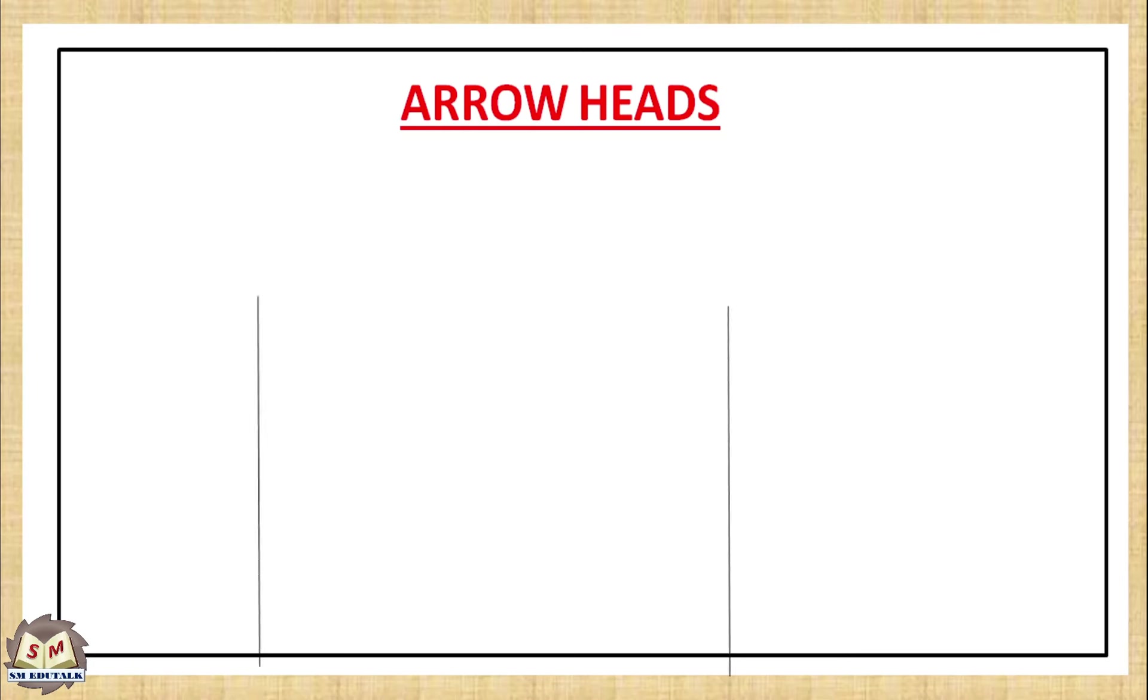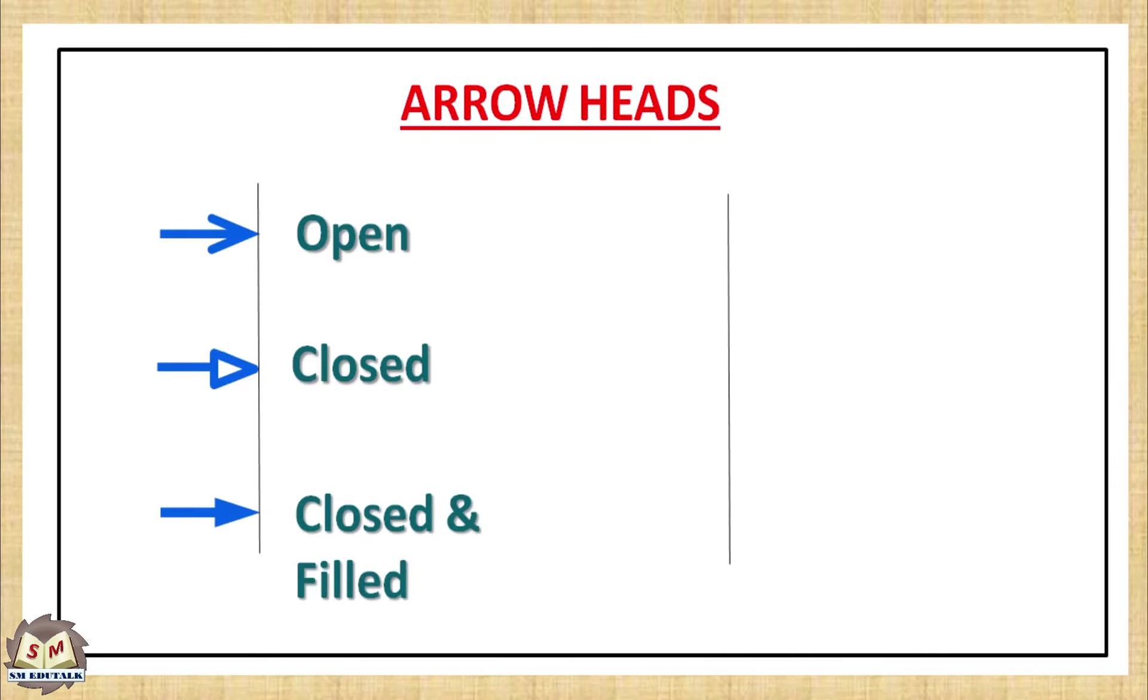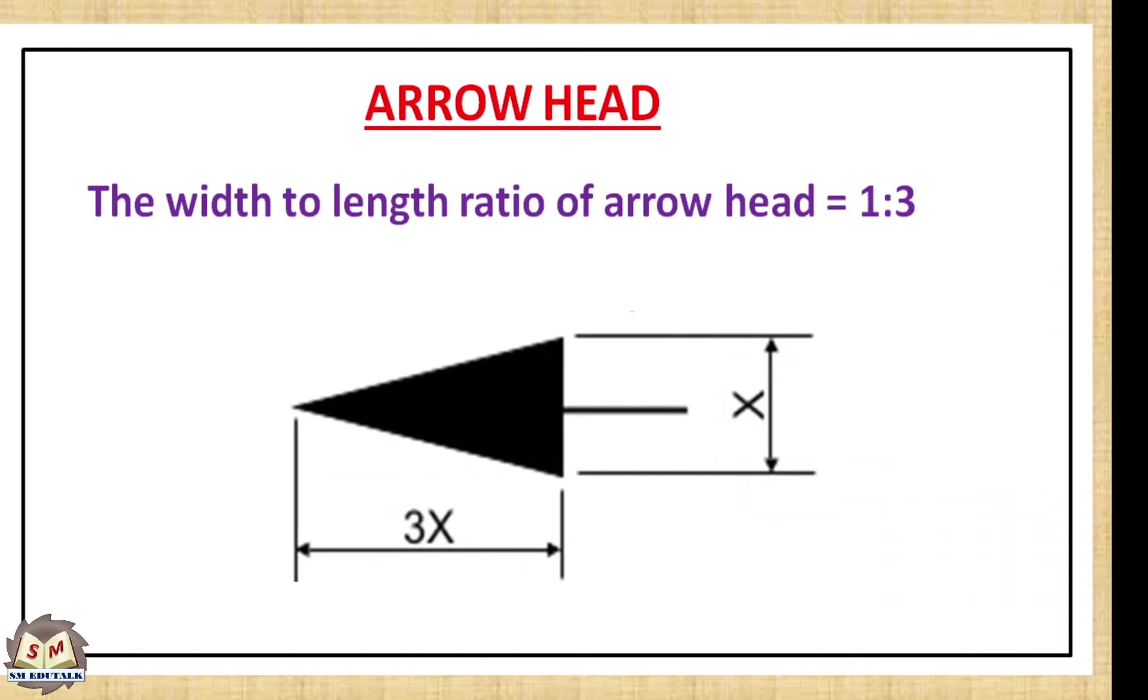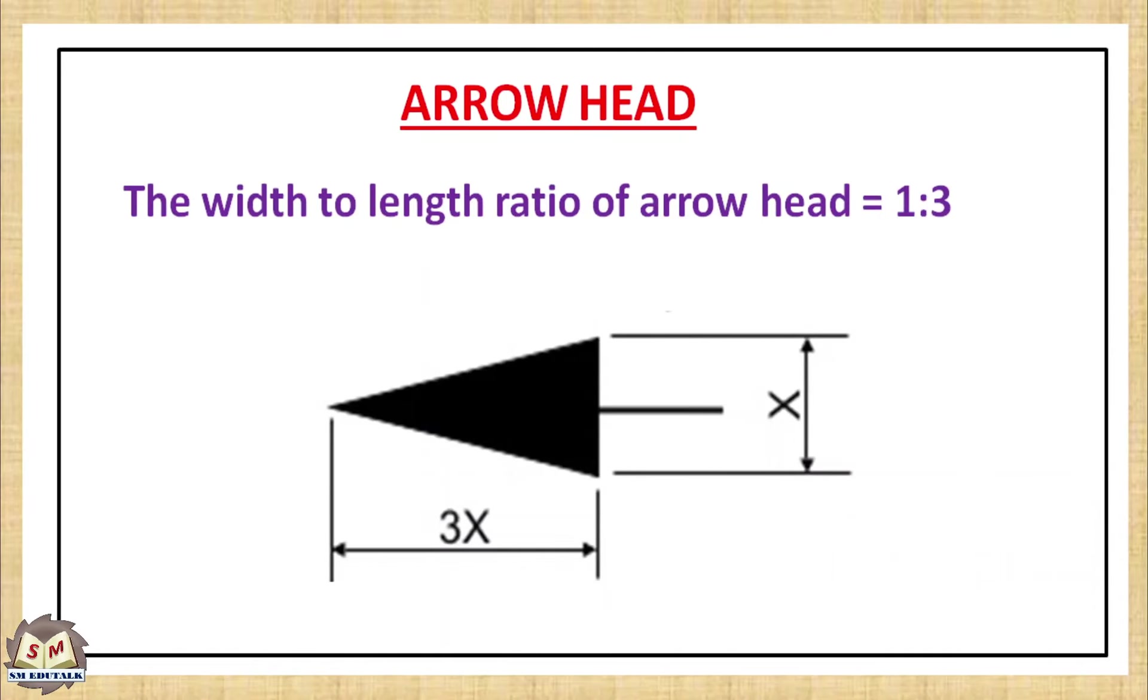There are many types of arrow heads. This is an open arrow head. This one is closed arrow head. Third one is closed and filled arrow head. This is dot type. The last one is oblique stroke.